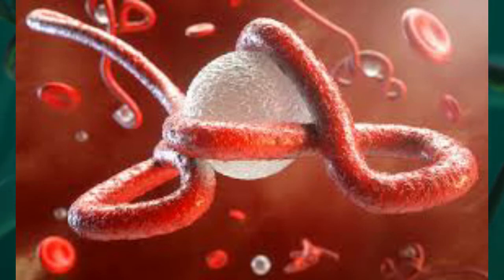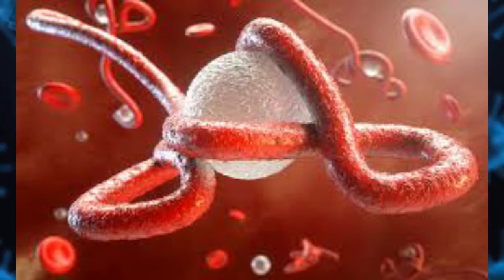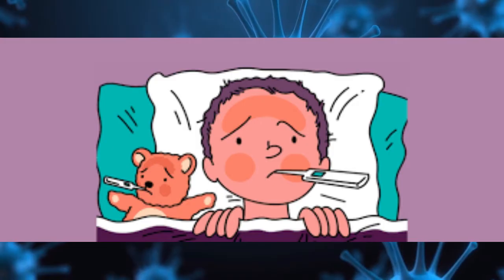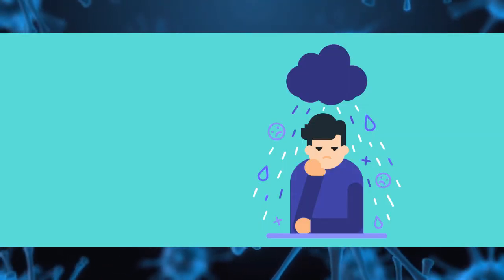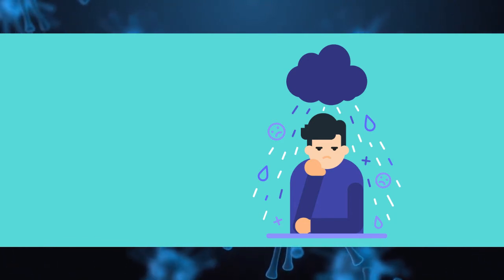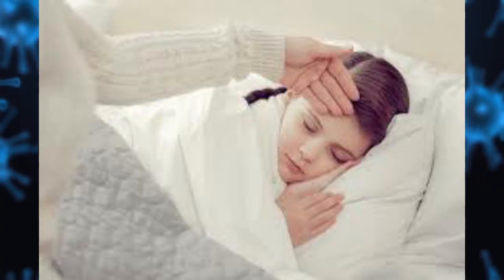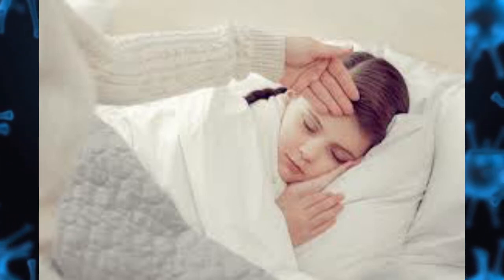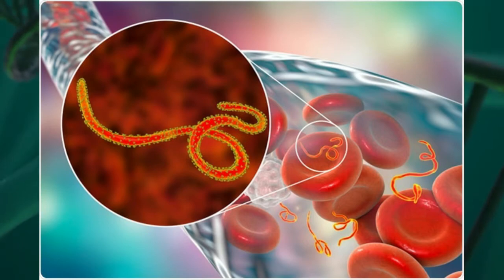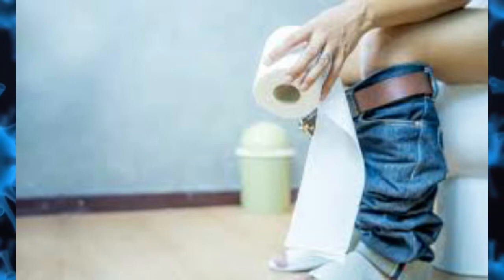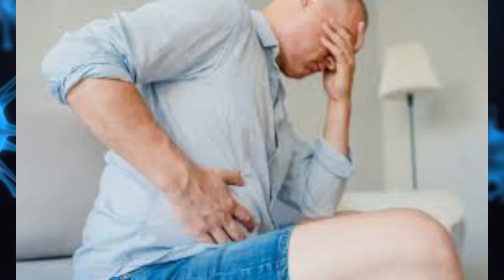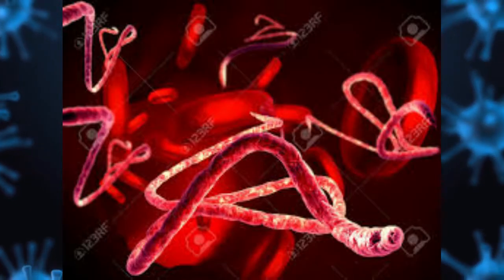Right now, therapy for Ebola is restricted to serious steady care and incorporates adjusting the patient's fluids and electrolytes, keeping up their oxygen status and pulse, and treating a patient for any complicating infections. The first cases of Ebola were reported simultaneously in 1976 in Yambuku, near the Ebola River in Zaire, now the Democratic Republic of the Congo, and in Andara, Sudan. Since then, eruptions or asymptomatic cases of Ebola have surfaced intermittently due to outbreaks, laboratory contamination, and accidents.